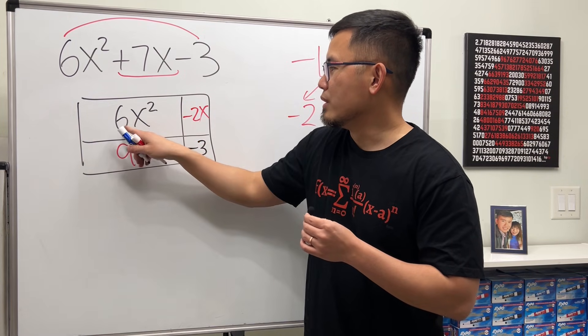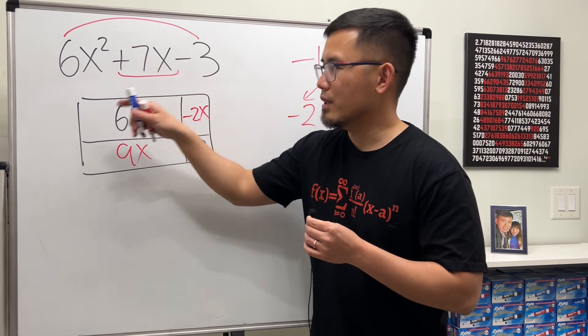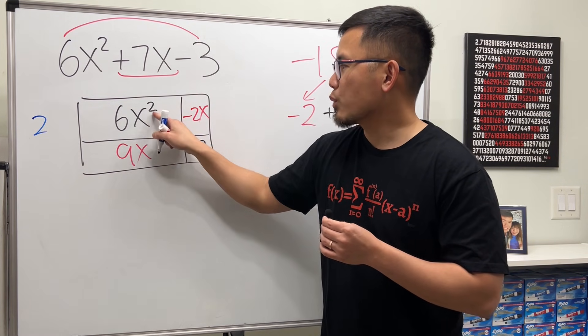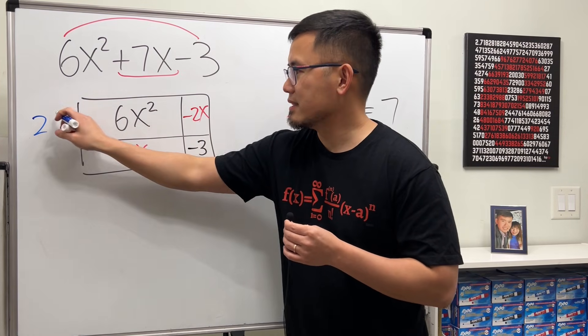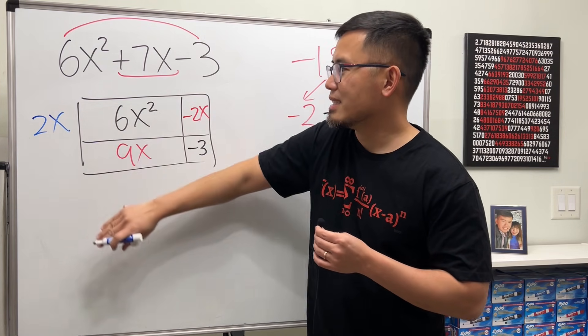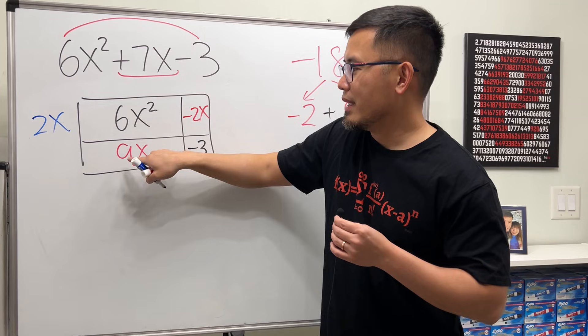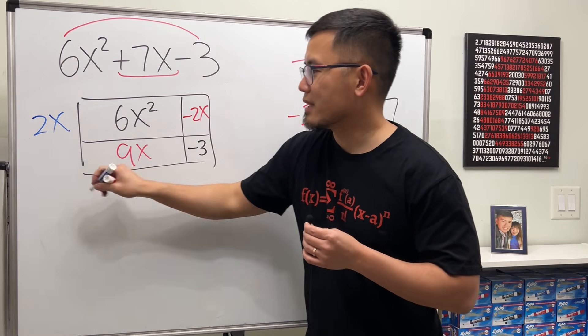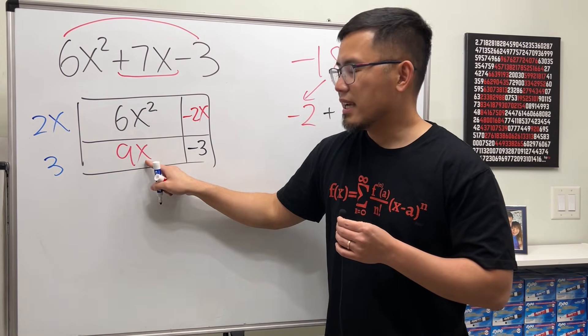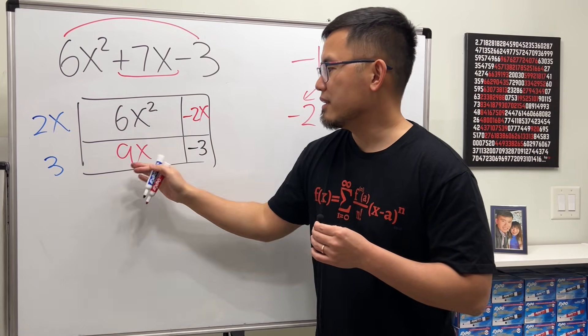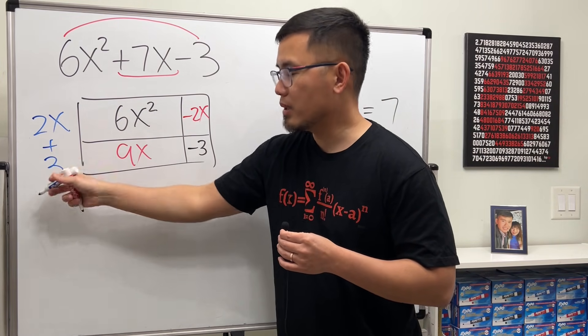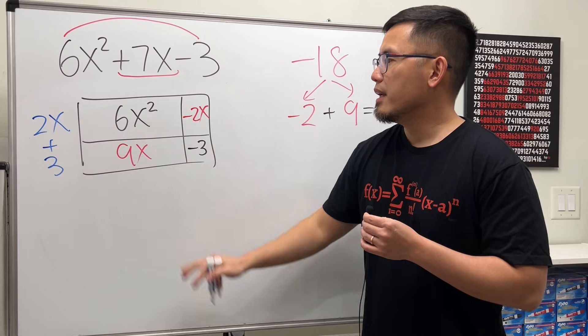Now, just look at the top row. 6 and 2, we can factor out a 2. x squared and x, we can factor out an x. Done with that. Now, bottom row. 9 and 3, we can factor out 3. This has x, this does not. We took out a positive 3, so plus.